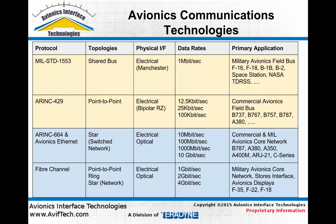With both ethernet and fiber channel, there are several options for the data bit rate used on the interconnects between the end nodes and the switches. For example, with ethernet, from 10 megabit all the way up to 10 gigabit per second is currently possible. And with fiber channel in common avionics applications, anywhere from 1 gigabit to 4 gigabit can be found.